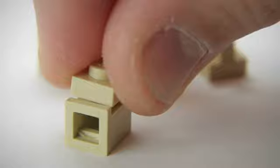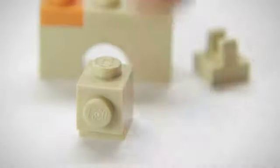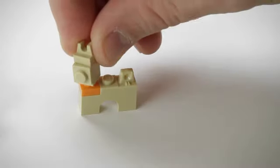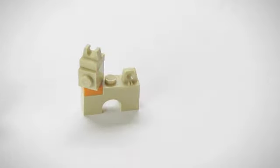And then you place a one by one plate on top of the angular brick. And then you place this clip to make the ears of the boxer. So there we go.